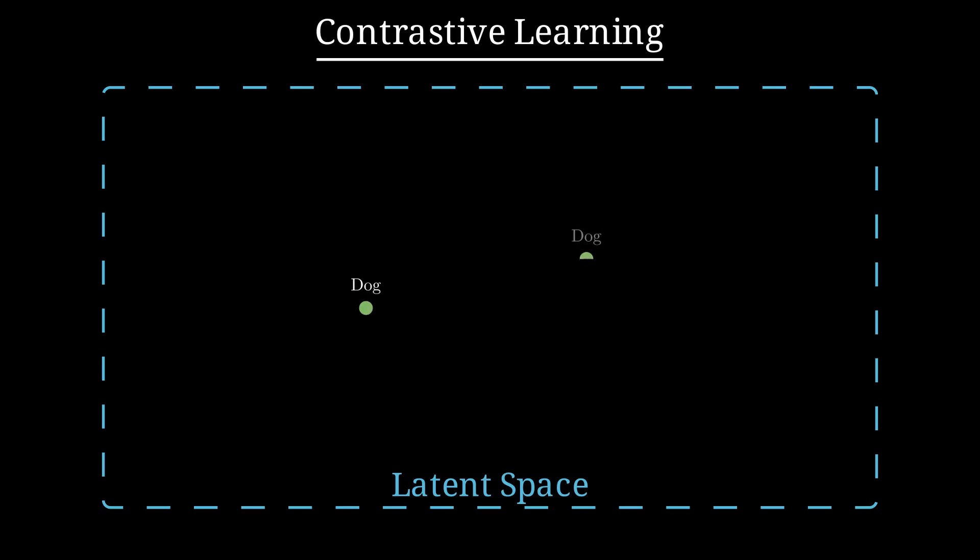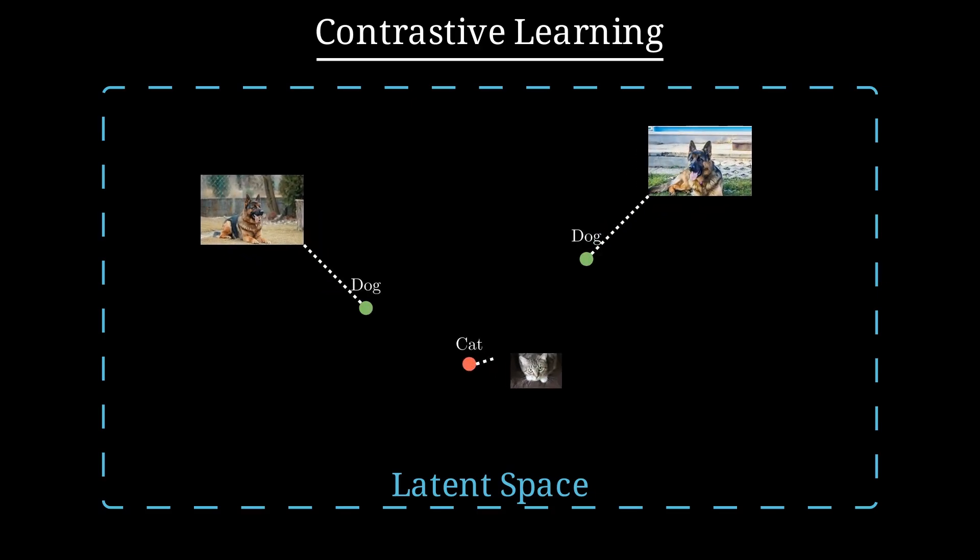Imagine we have images of a cat and a dog. In the latent space of the neural network, two images of the same dog should be close together, even if they're taken from different angles or under different lighting. And of course, the image of the cat should be farther away from the images of the dog, because they represent two different things.